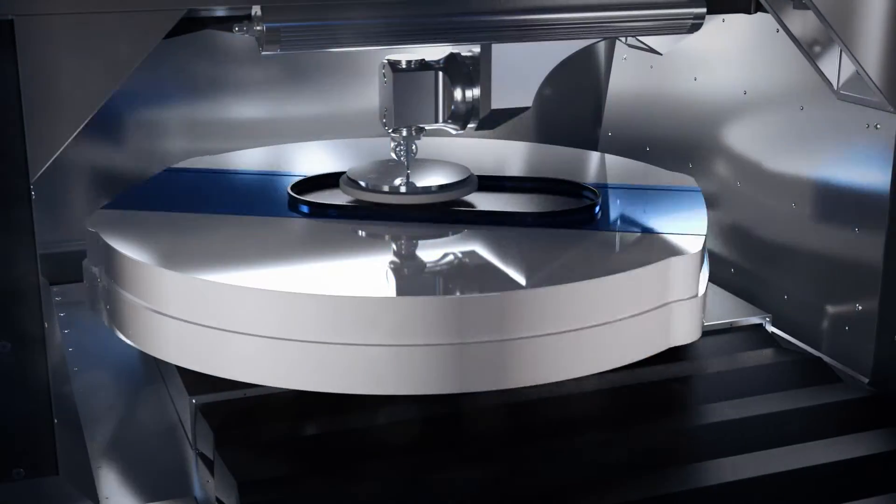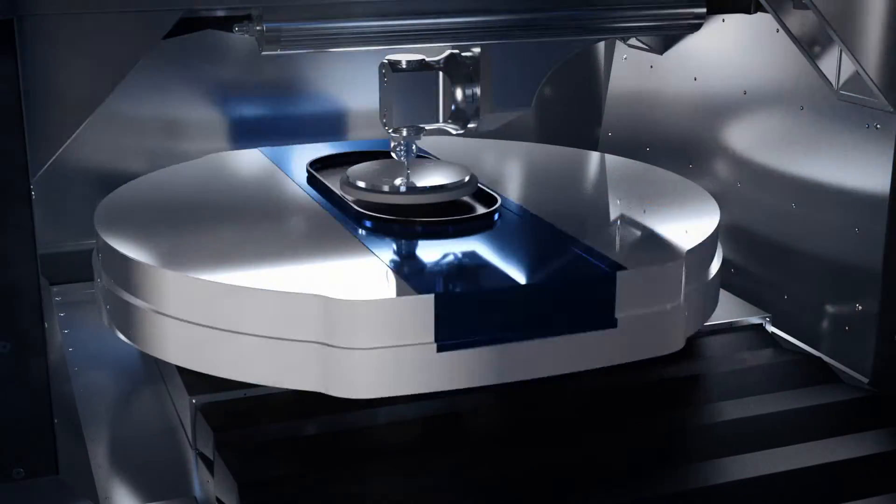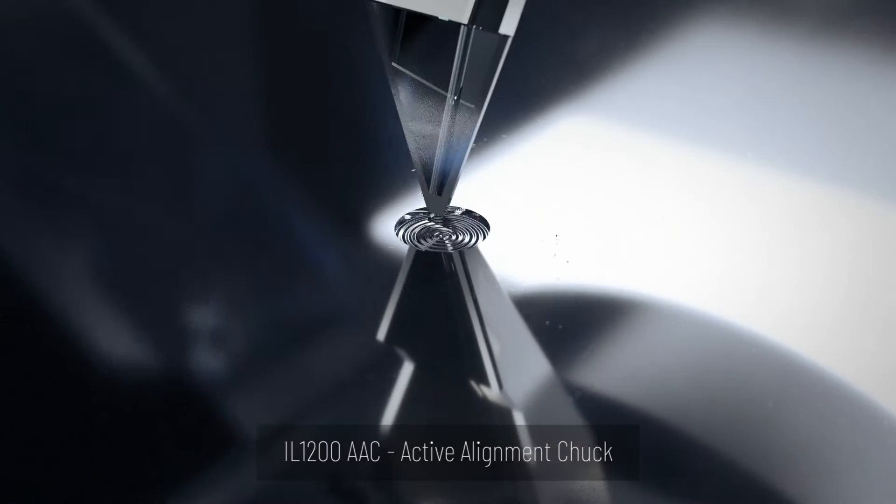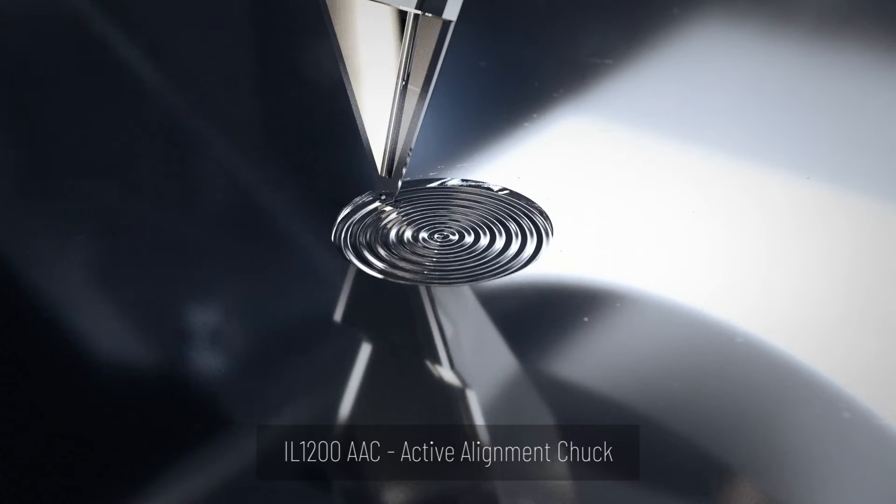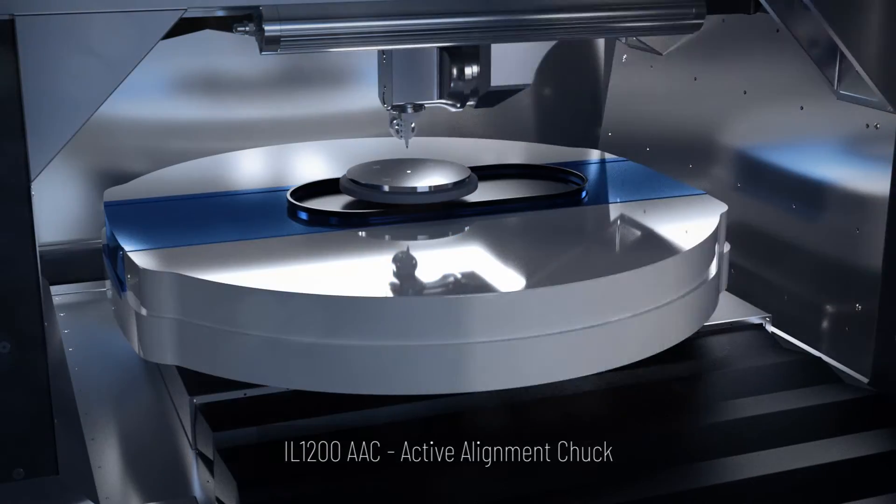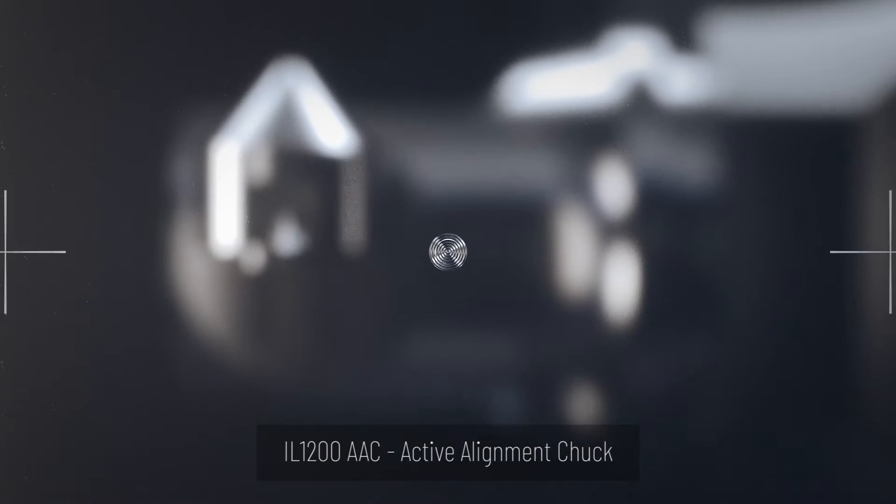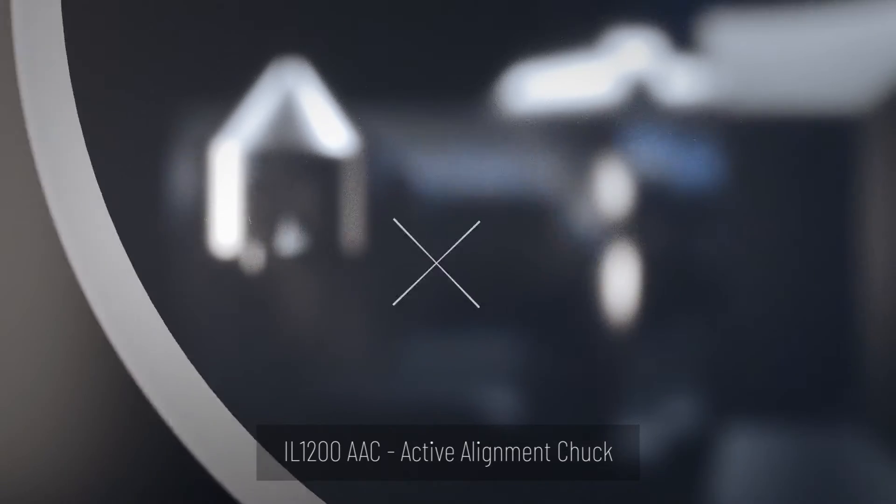The IL-1200 can be optionally equipped with a vertically orientated active alignment chuck to individually cut wafer-level optics. Two degrees of freedom in the active chuck allow for the individual alignment of preset markers to the axis of rotation of the main spindle.